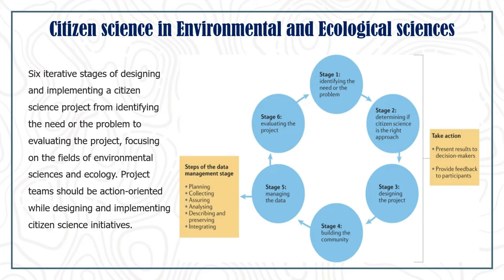In citizen science applied to environment and ecological services, there are six interactive stages of designing and implementing a citizen science project — from identifying the need or problem to evaluating the project. Focusing on the field of environmental science and ecology, the project teams should be action-oriented while designing and implementing citizen science initiatives.